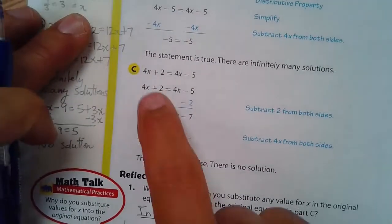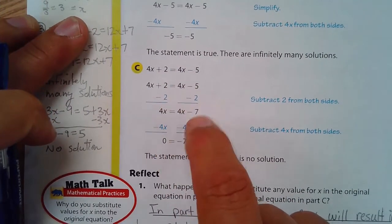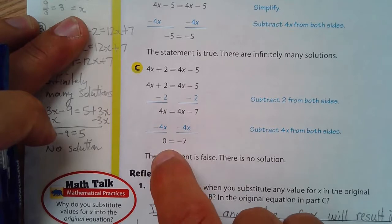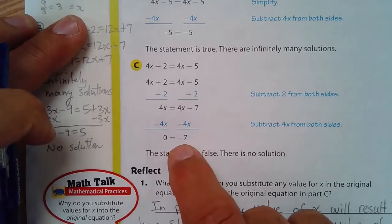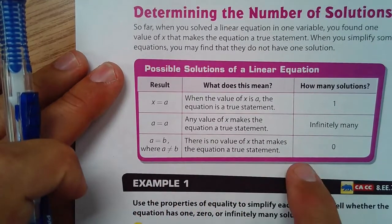And then we have this one, where when we solve this, and we subtract 2, subtract 4x from both sides, we get 0 equals negative 7, which is untrue. It's false. There is no solution there. And that's what they're talking about right here. No solutions.